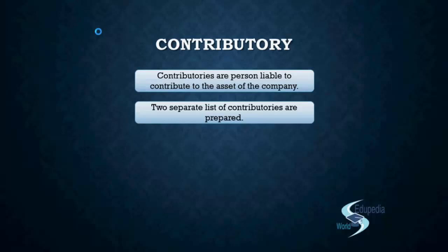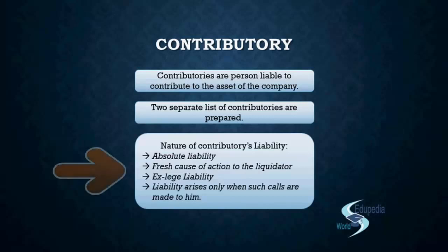The court can also dispense with preparing the list if it thinks no contribution would be required from the contributories — this generally occurs in members' voluntary winding up where the company has sufficient funds or surplus to pay off all debts and liabilities. These contributories are now required to contribute to the company's assets in the course of winding up. The nature of liability of contributories falls into four basic categories: absolute liability, fresh cause of action to the liquidator, ex-legal liability, and liability arises only when such calls are made.